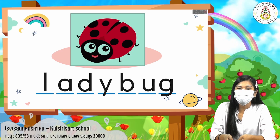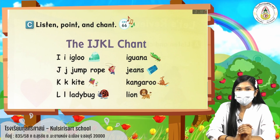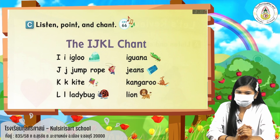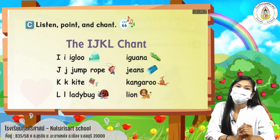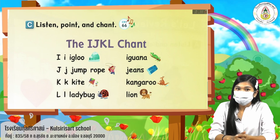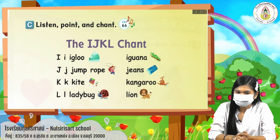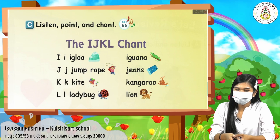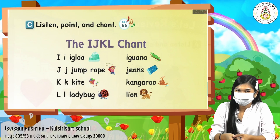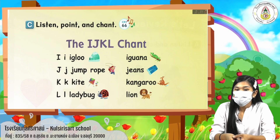Those are the words that start with letter I, J, K, and L. Now let's move on to the listen, point, and chant activity. Let's read it first, and later I am going to play a video. Read with teacher: I, J, K, L — chant. One more time: I, J, K, L — chant.